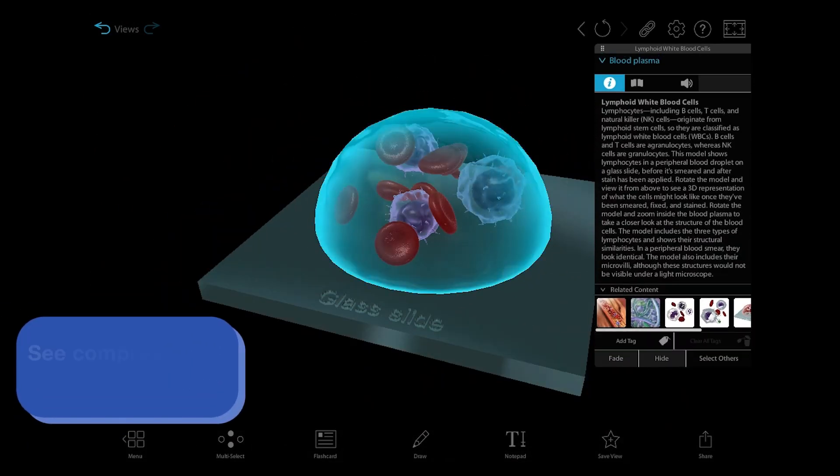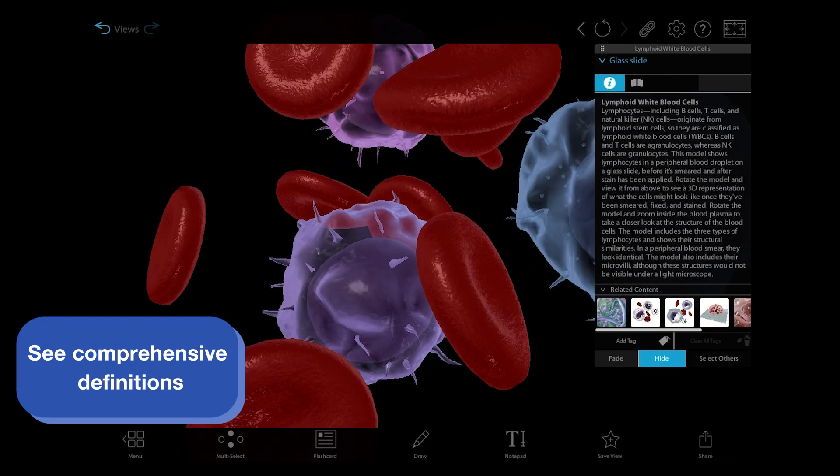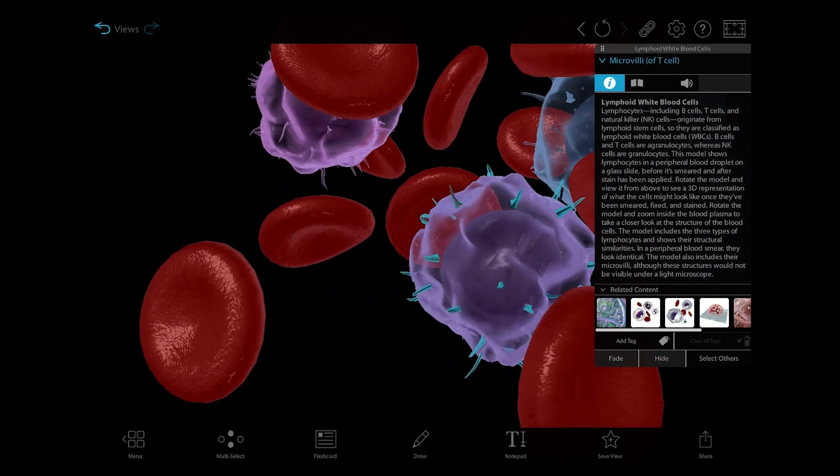Highlight different types of cells and their features like pseudopodia and microvilli to learn more from the info box.